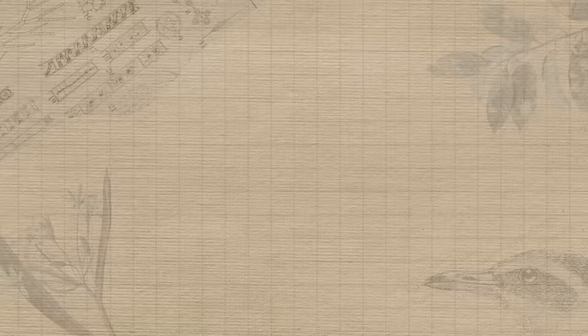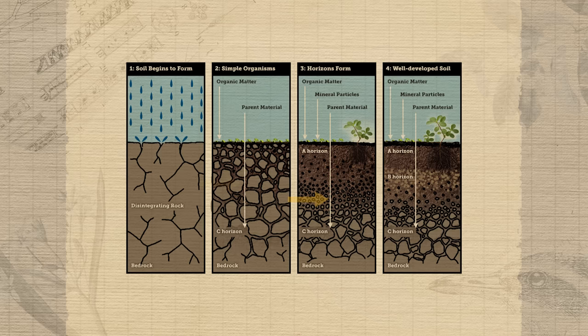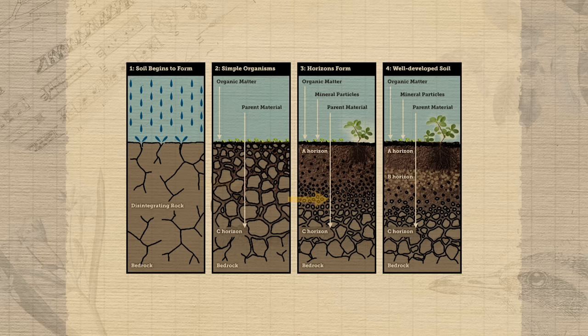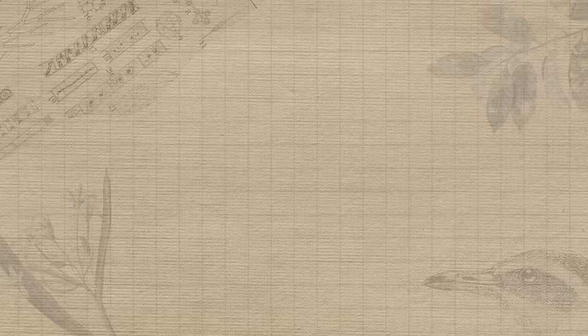The inorganic or mineral components of soil come from the weathering of rocks. Over time, the force of rain and the freeze-thaw cycle of water breaks rocks into smaller and smaller pieces. We call the rocks that these pieces came from parent material. So there's another reason not to call soil dirt — it has parents after all.